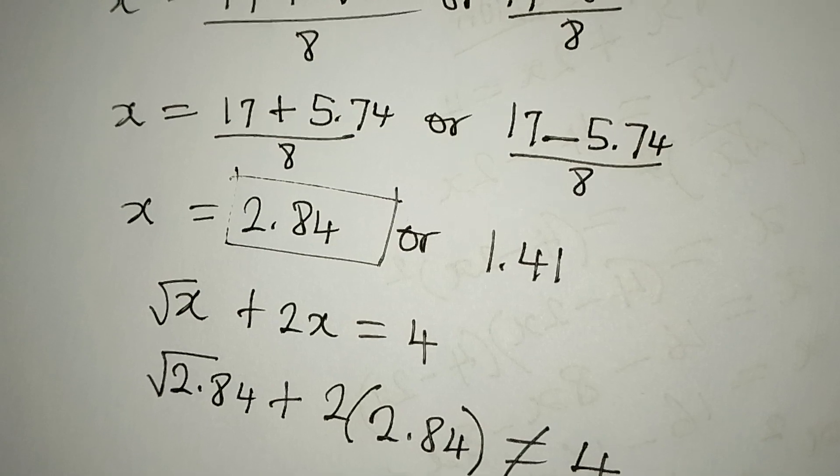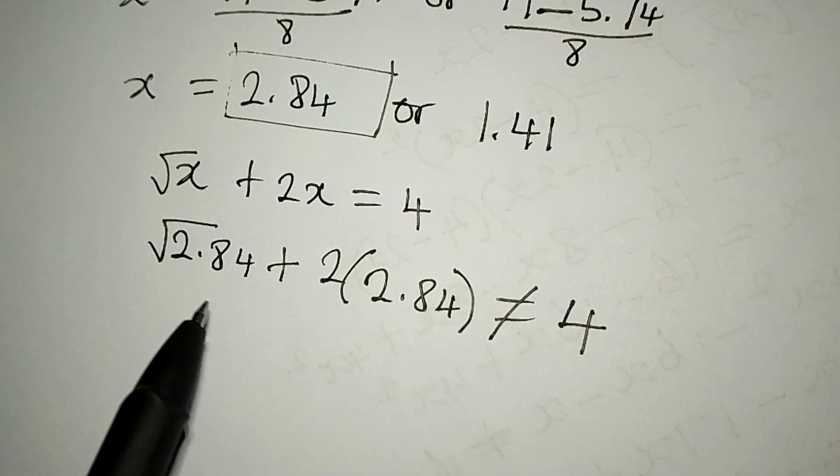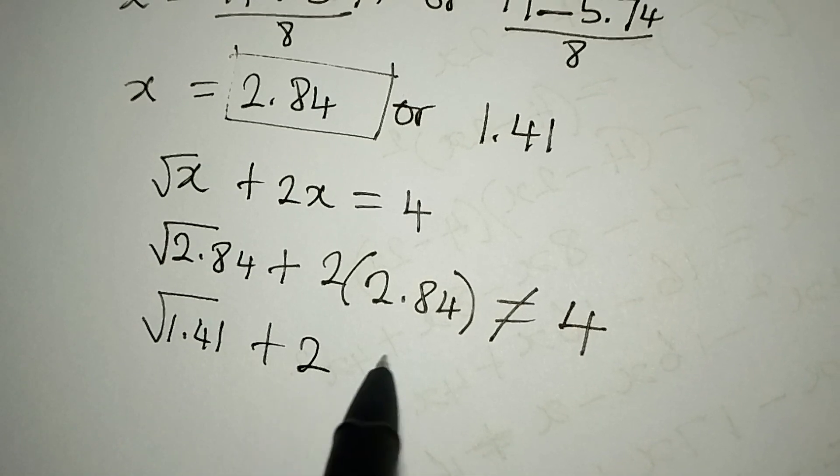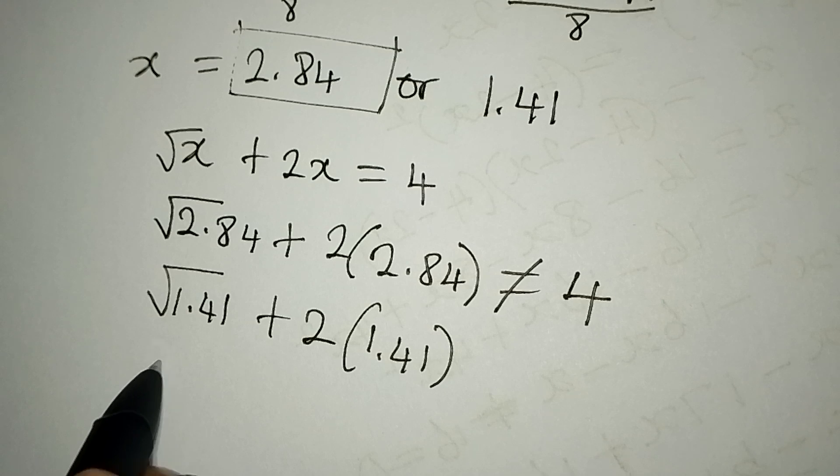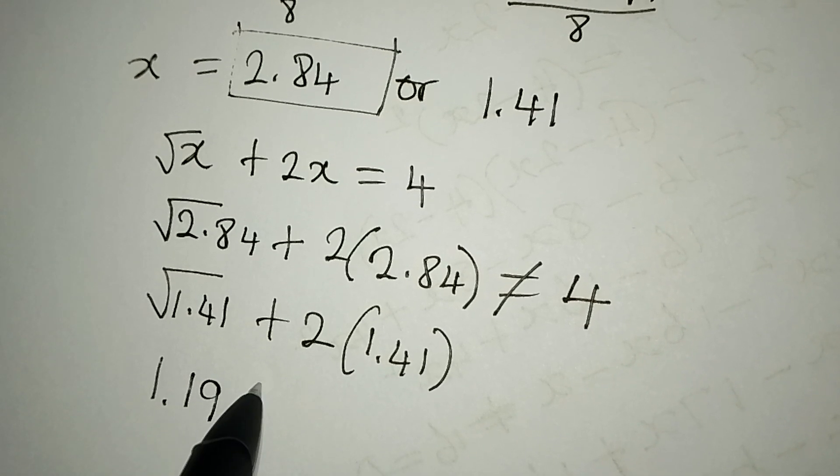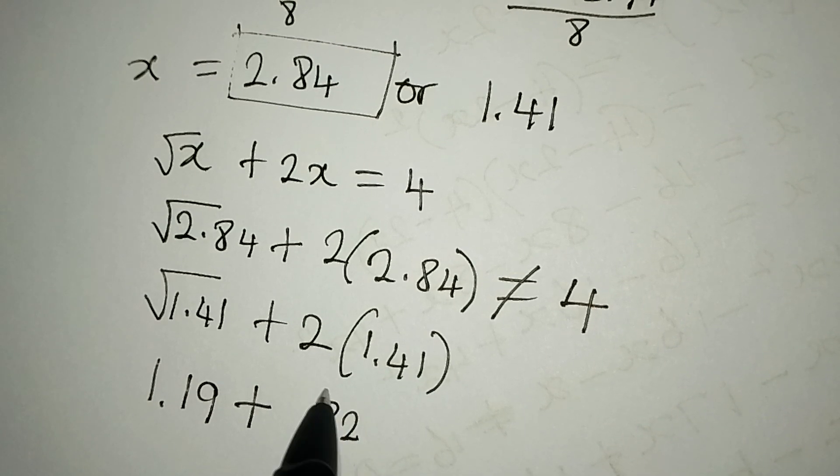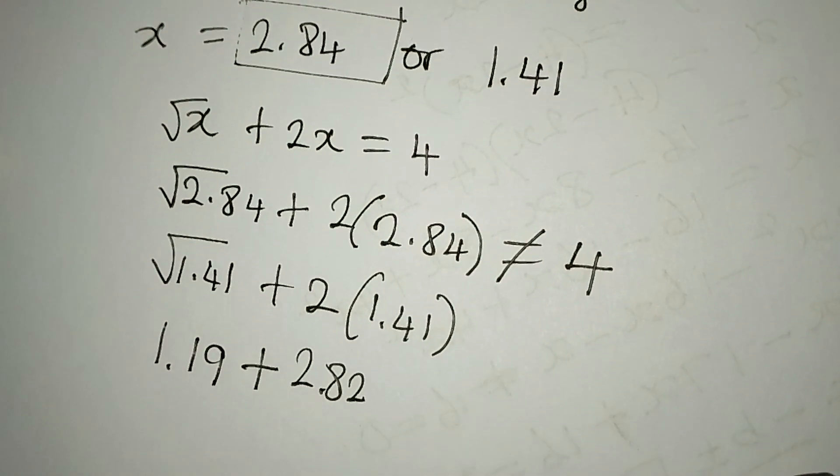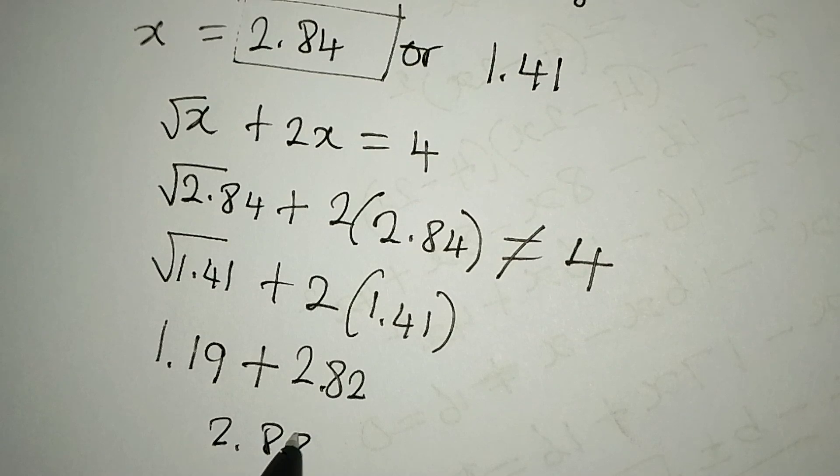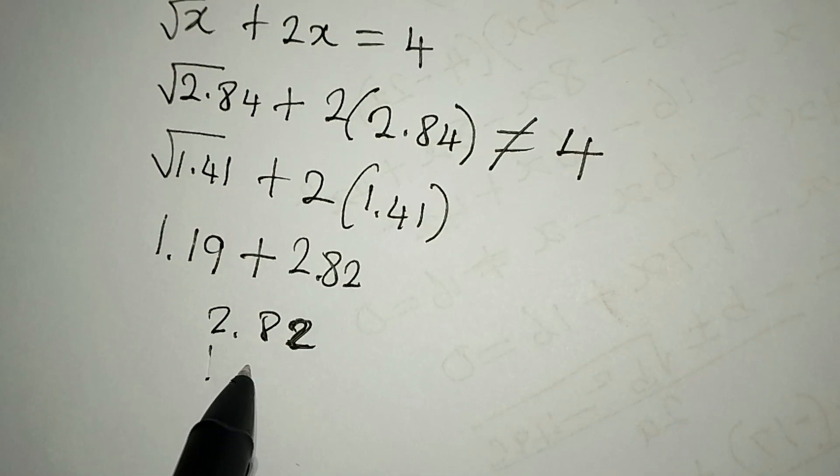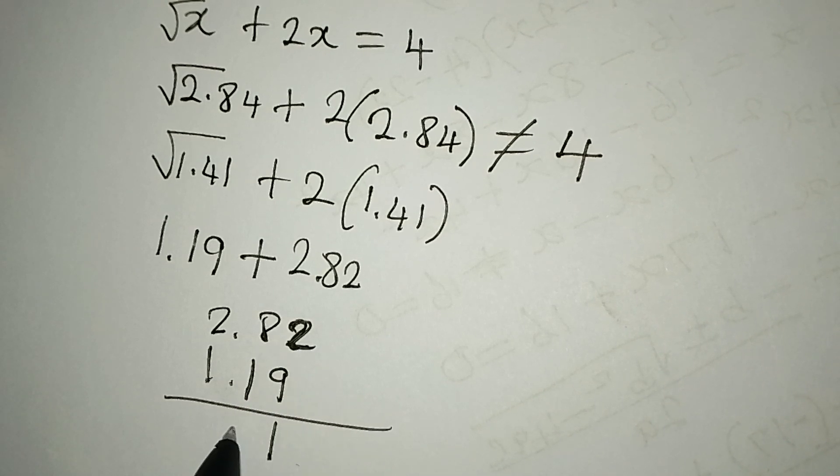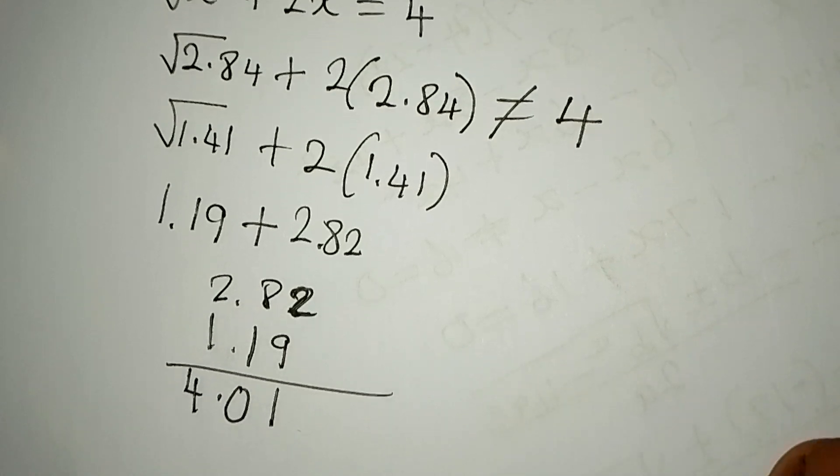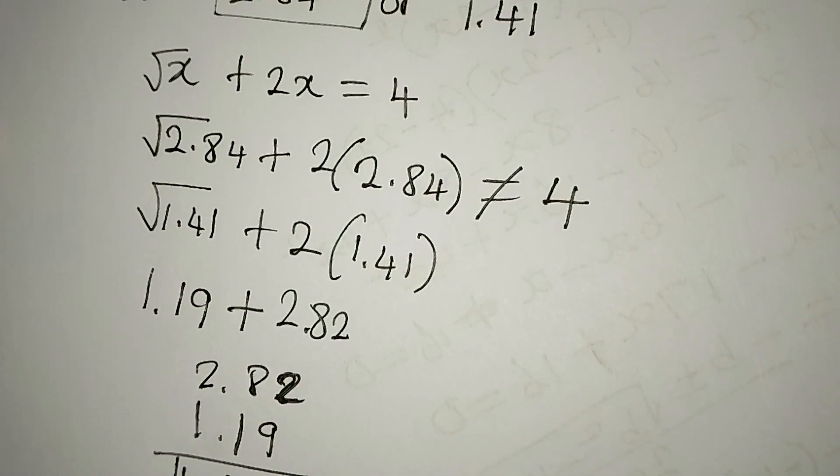And if that is rejected, then we'll be working with 1.41. If you put in here you have square root of 1.41 plus 2 multiplied by 1.41. I will find the square root of 1.41, approximately it's 1.19, then plus 2 times 1.41 is 2.82. So we have 2.82 plus 1.19, let's add this to see if it's going to give us a figure that's approximately 4. This is going to give us 4.01 instead of 4, and this is still very correct. So x equal to 1.41 is correct. Remember this is an approximated figure.